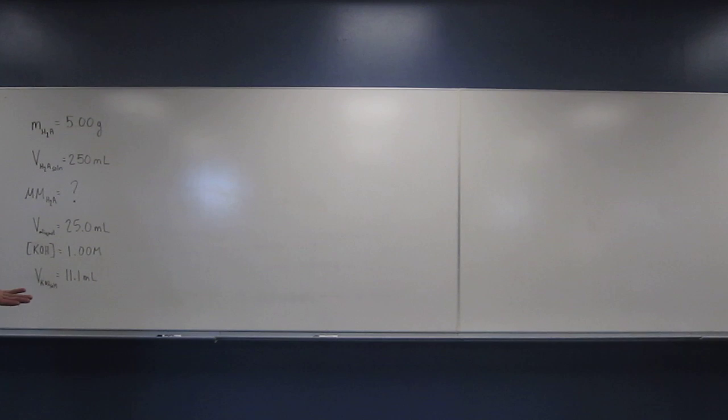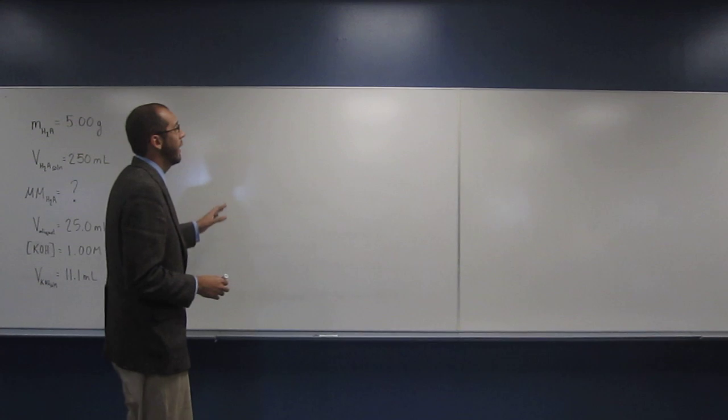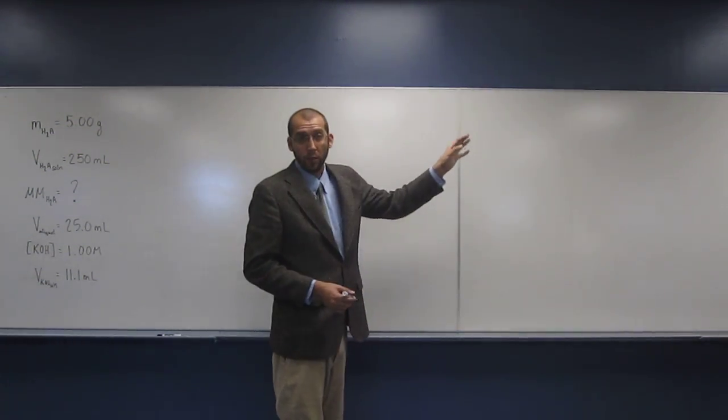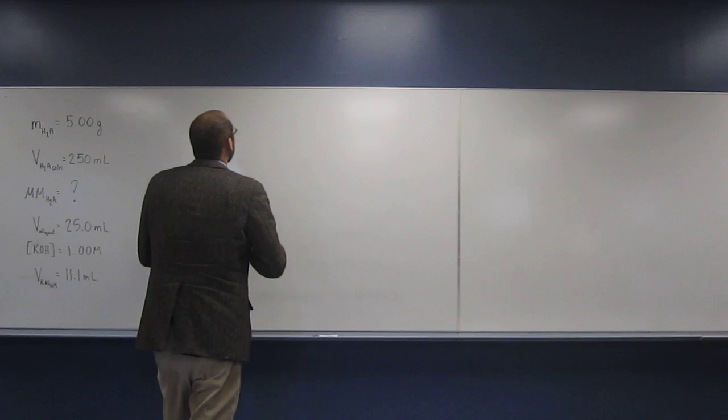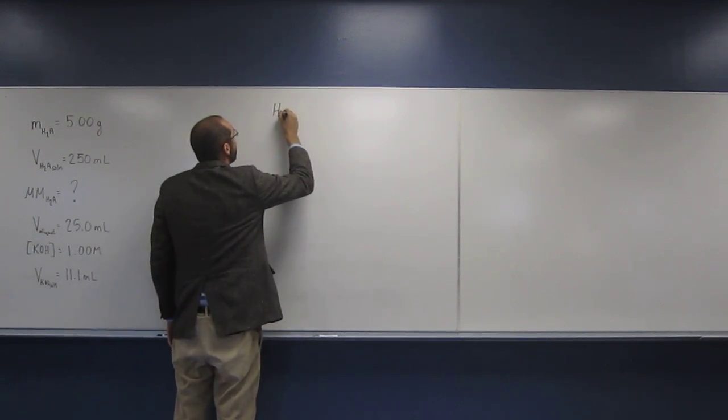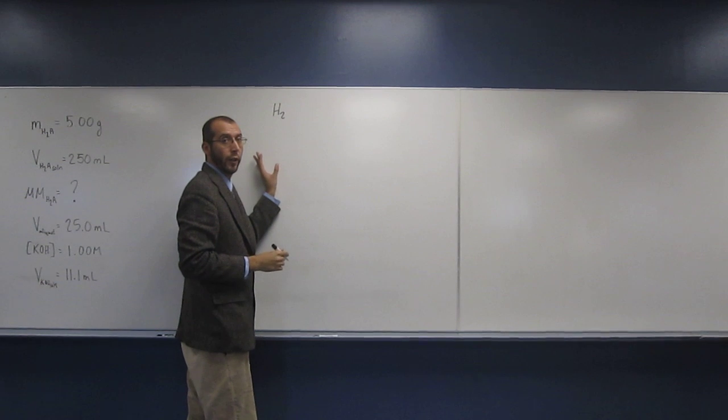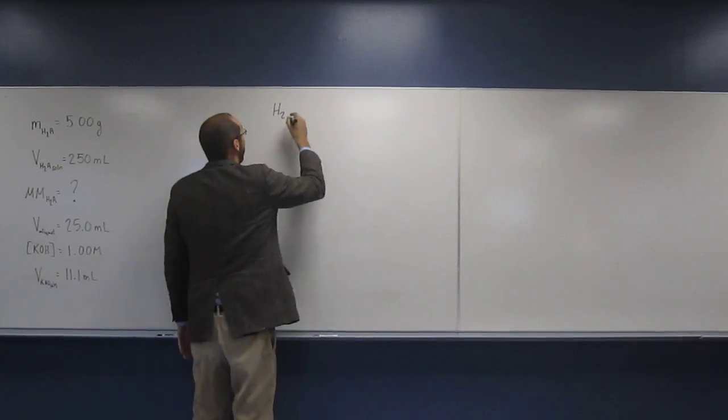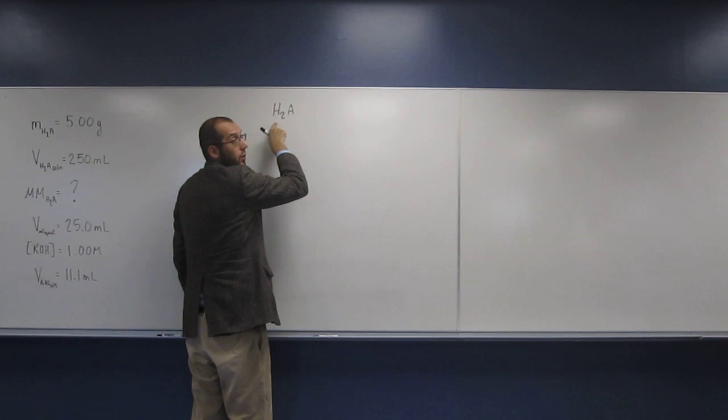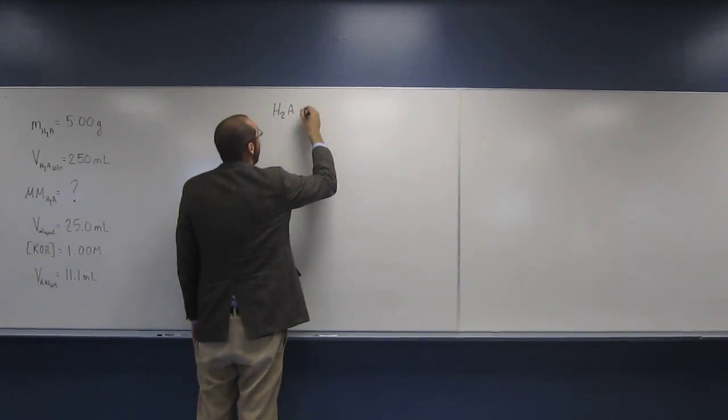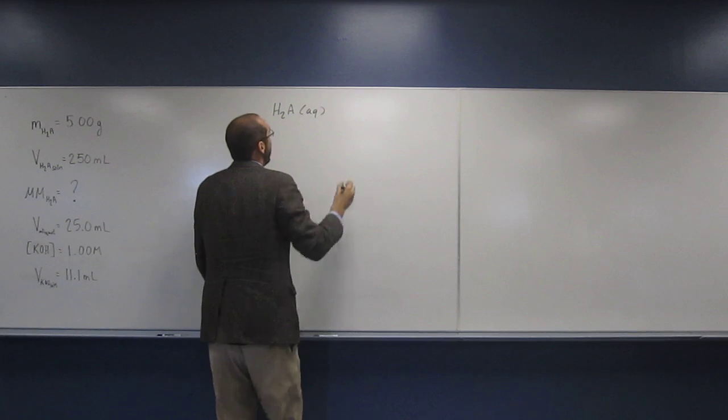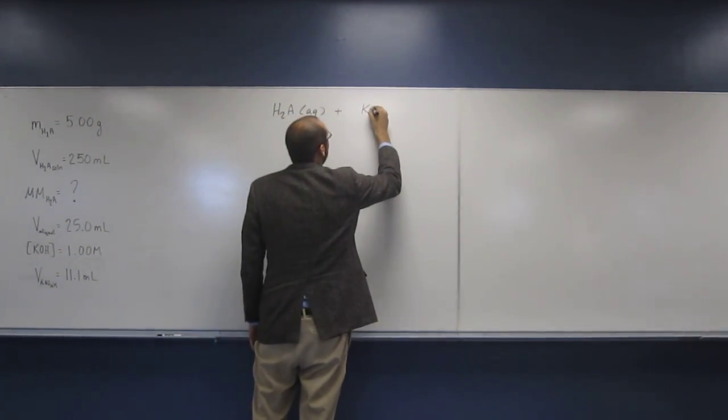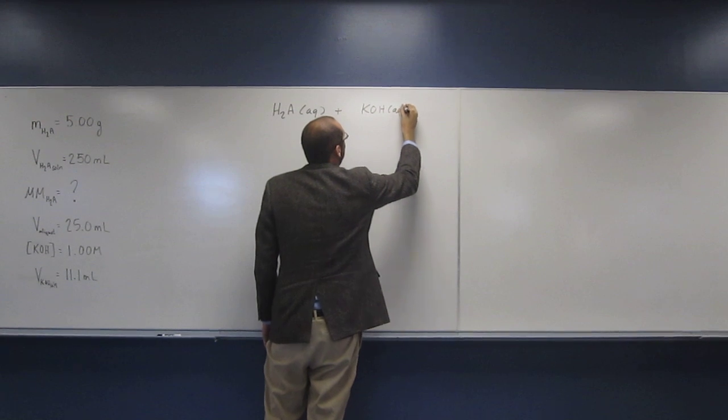So we know that it's a diprotic acid. We know that we're reacting it with potassium hydroxide and we know that it says assume both of the protons were titrated. So from that we should be able to write out a reaction equation. So the reaction equation, and this is just a general diprotic acid. We don't know what the acid is, so I'm just going to put H2, so those are the two protons that are going to be removed, and just A for a general acid. Aqueous, we're going to react that with potassium hydroxide aqueous.